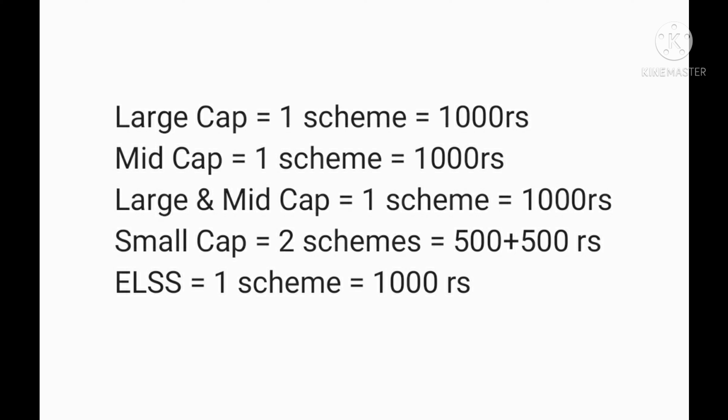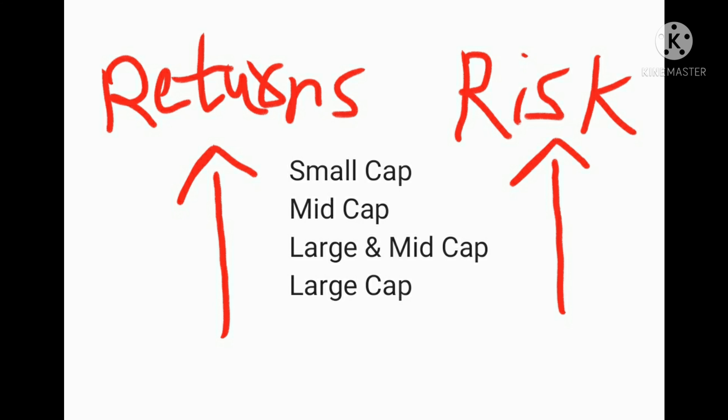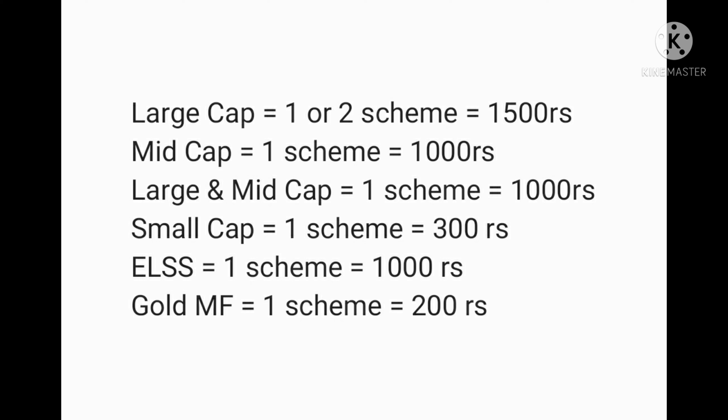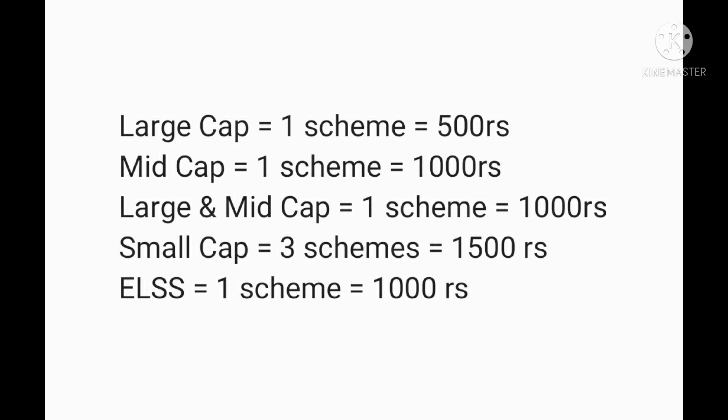Now the next important part is how you can customize this portfolio for yourself based on your risk factor. If you notice, returns increase from large cap to small cap, but risk also increases from large cap to small cap — small cap has maximum returns but also maximum risk. If you are a conservative investor and want less to moderate risk, you can reduce your small cap allocation and increase your large cap allocation. You can also include a gold mutual fund for added protection. Similarly, if you are young and want to invest aggressively, you can increase your small cap allocation.